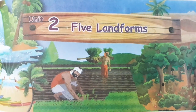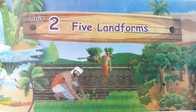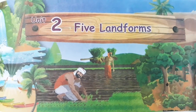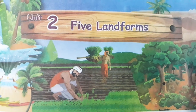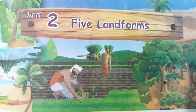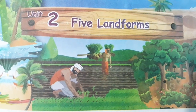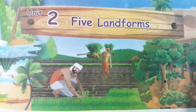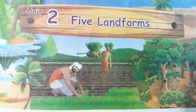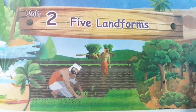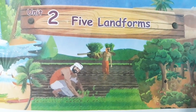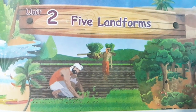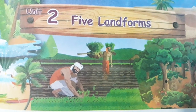Welcome to lesson 5 on landforms from unit 2. In this lesson we had already discussed the 4 landforms — Kurunji, Mullai, Marudam, and Neidhal. Today we are going to see the 5th one, that is dry land or Palai land.